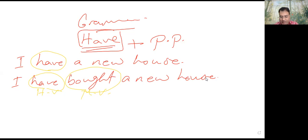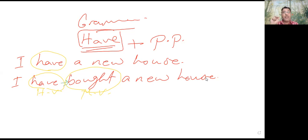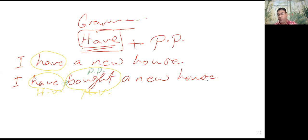الـ verb اللي بييجي بعد verb to have ما ينفعش يكون بأي form تانية — لازم يكون just in this form: the third form, اللي هي the past participle form. لازم يكون past participle after verb to have.